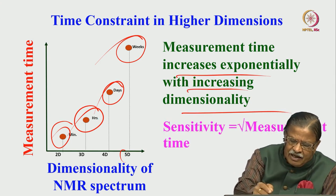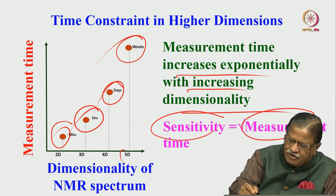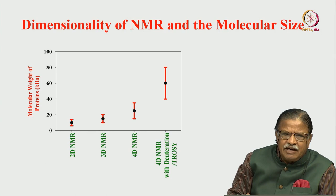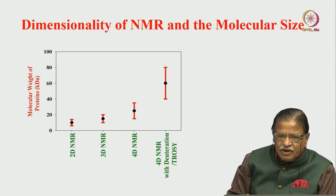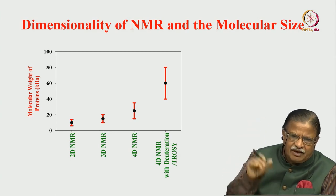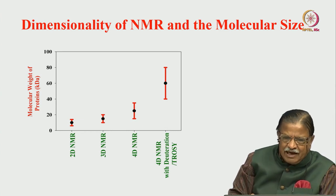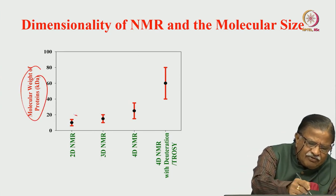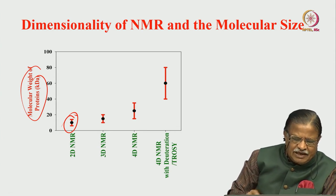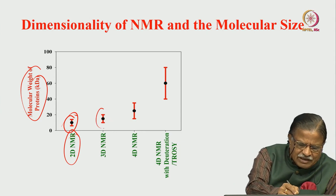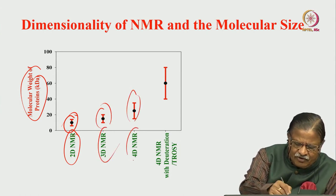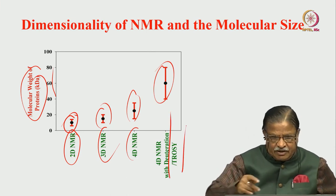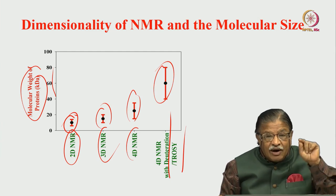The cost of an NMR instrument runs into several crores — an 800 MHz spectrometer may cost about 15 crores. Nobody will give you one or two weeks to run a single experiment. So you must judiciously decide, depending on the information you want to derive, whether you want to do a higher-dimension experiment. Measurement time increases exponentially with increasing dimensionality. Also, sensitivity decreases — it goes by the square root of the measurement time. Furthermore, dimensionality also depends upon the size of the molecule.